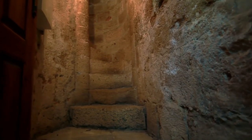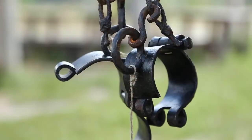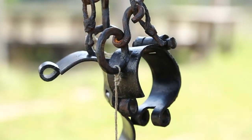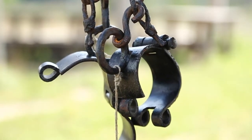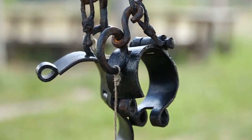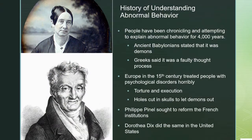Over time, things started to mellow out and people were being institutionalized. But still, in these institutions, they were tied to chains and put in horrible, damp locations to suffer even more — until this guy came around by the name of Pinel, who sought to reform the French institutions and to form places where these people could actually have a sense of healing. In the United States, we also had somebody, Dorothea Dix, who did the same thing — trying to create places for these people to live that were not horrible, where the person could actually find healing.